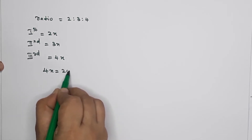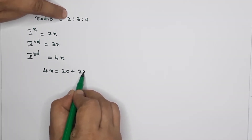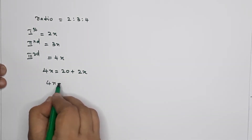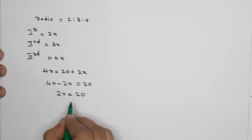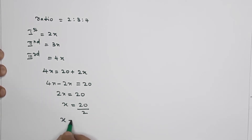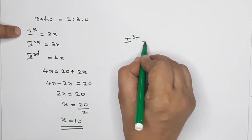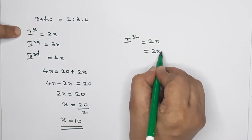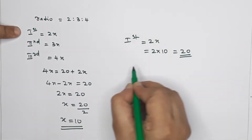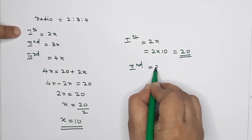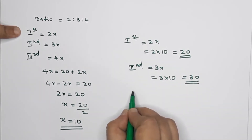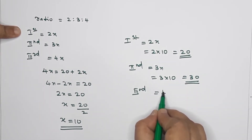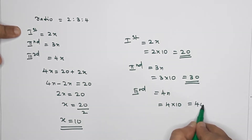The longest side is 20 centimeters more than the shortest side. The longest side is 4x and the shortest is 2x. So 4x minus 2x equals 20, that means 2x equals 20, so x equals 20 divided by 2, therefore x equals 10.